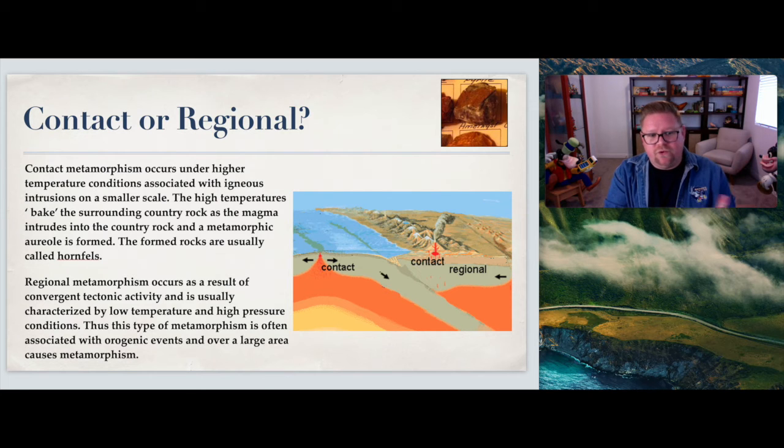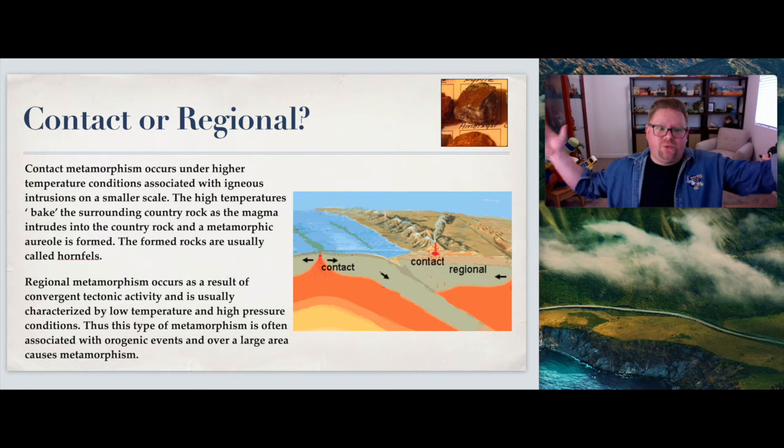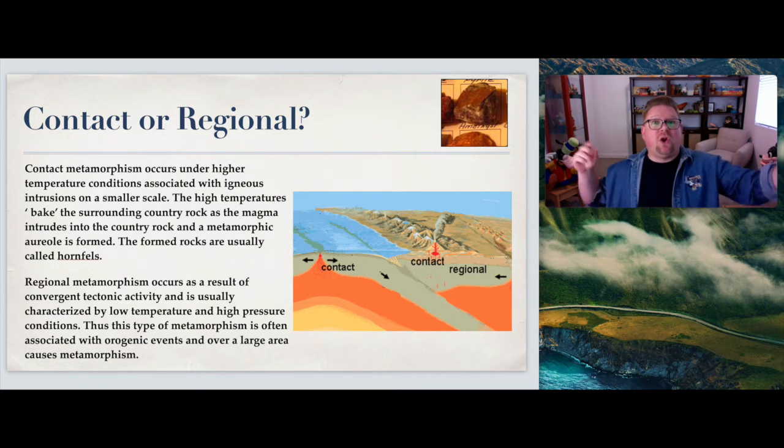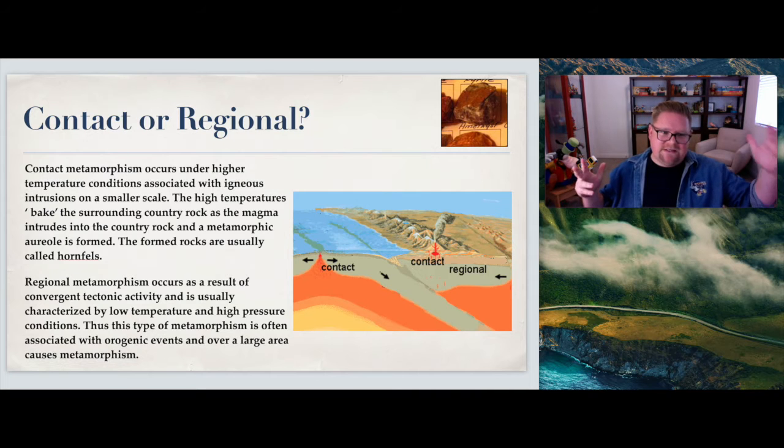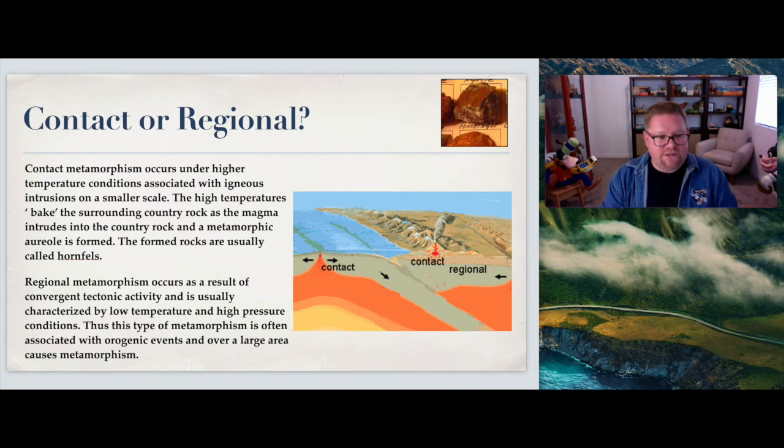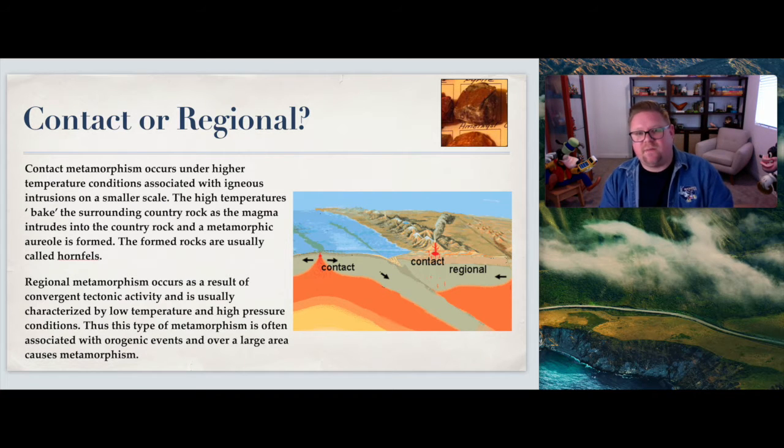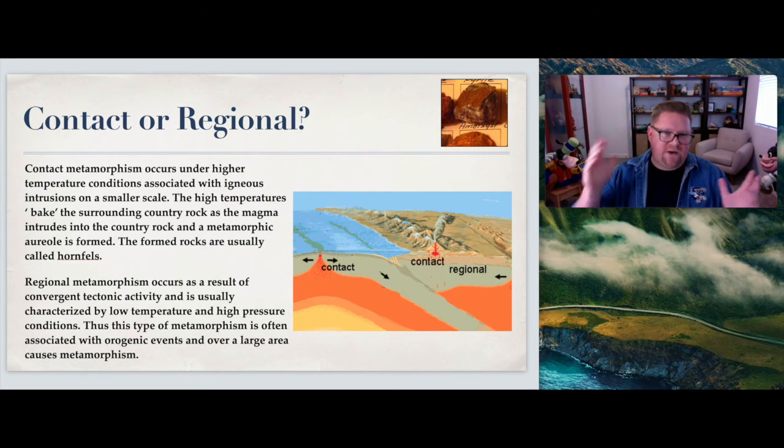Regional metamorphism occurs as a result of convergent tectonic activity and is usually characterized by very low temperatures but high pressure. These conditions exist perhaps on subduction zones. Regional is huge regions that are affected by this, much larger, slower in a sense, not as hot but grand pressure that's being built up. This type of metamorphism is often associated with orogenic events over large areas, and over large areas will cause greater metamorphism. We have additional pressure and weight being pushed either from the side or all around.